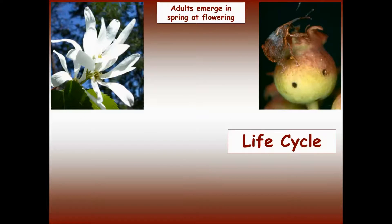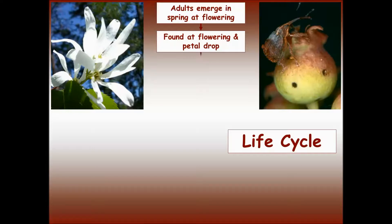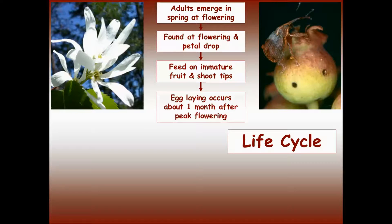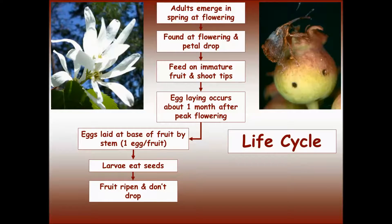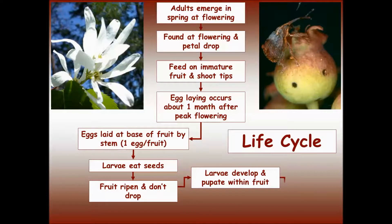Adults emerge from the leaf litter where they overwintered at about the time that saskatoon berries are flowering in spring. They are most often observed in the late flowering stages or at petal drop with early green fruit.